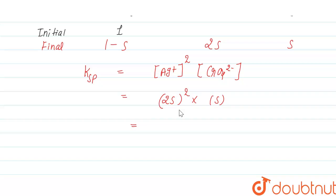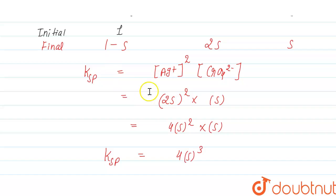Calculating: (2s)² × s = 4s² × s = 4s³. So the relation is Ksp = 4s³, where s is the molar solubility of the salt.